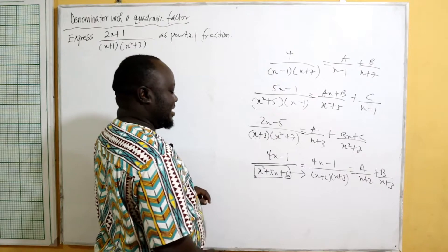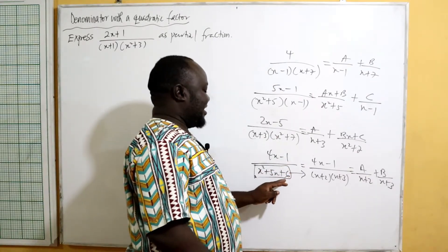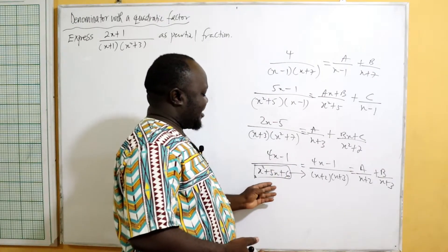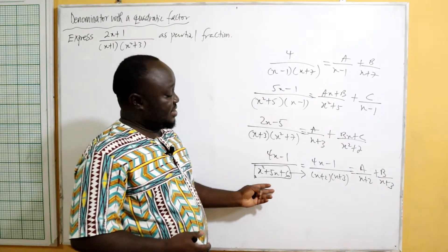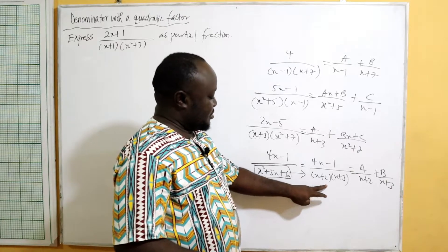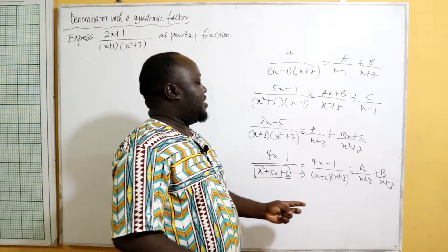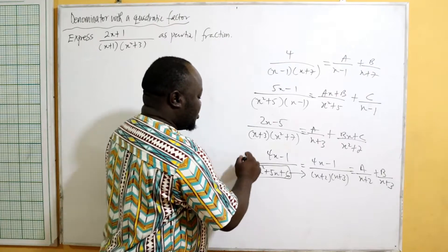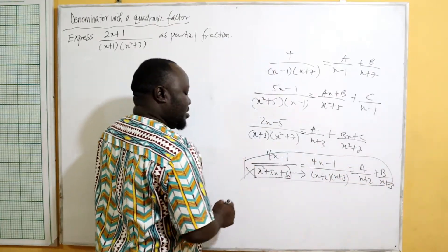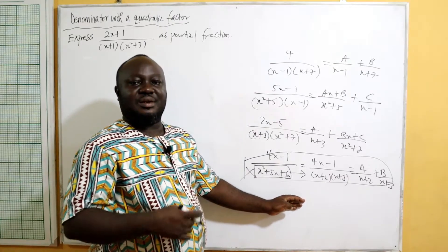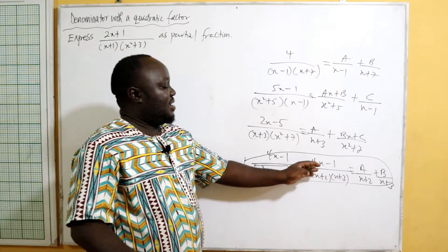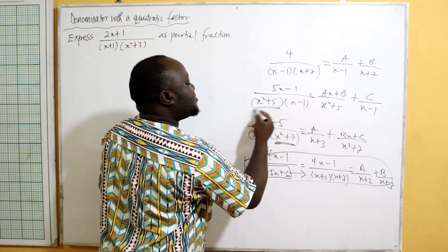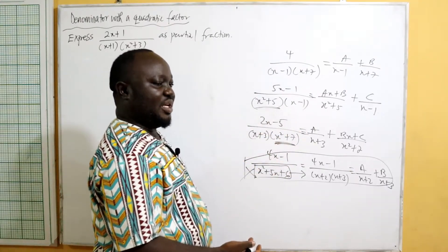You express four x minus one over x plus two times x plus three as a over x plus two plus b over x plus three. What you see as quadratic here doesn't mean you use ax plus b; if it can be factorized, it is linear. The quadratic factors we are talking about are types like x squared plus five or x squared plus seven, which cannot be factorized.